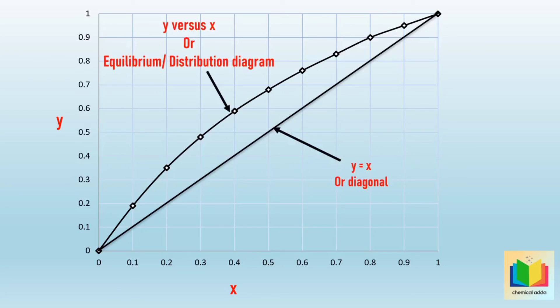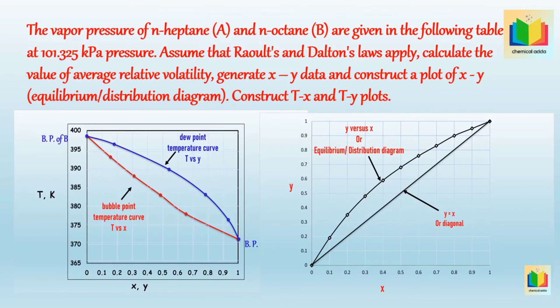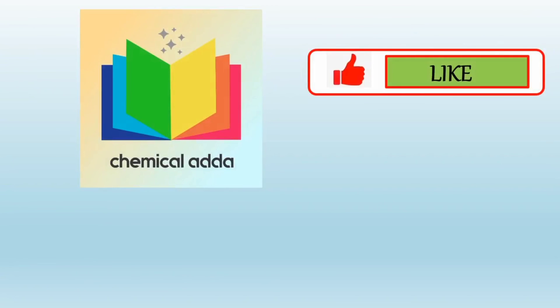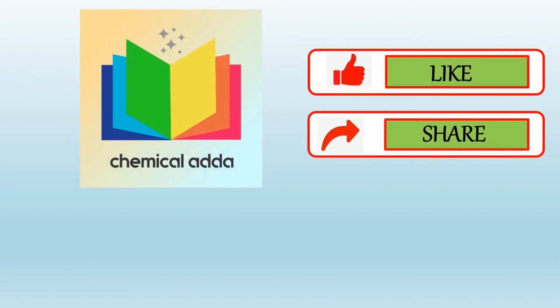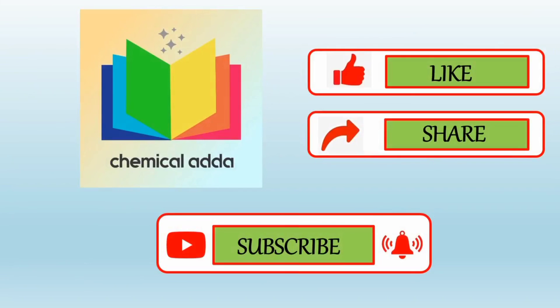That's all about how to calculate vapor-liquid equilibrium data using Raoult's law and Dalton's law, how to construct the T-X-Y plot, and how to calculate X-Y data from vapor pressure data and plot it. In the next video we will see another topic. If you like this video, please like, share, and subscribe to my YouTube channel, Chemical Edda.